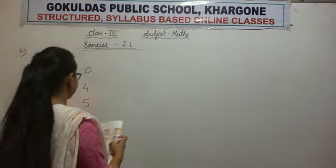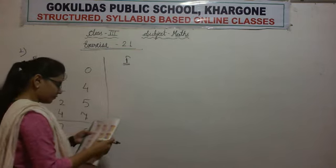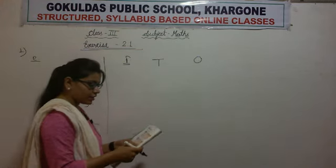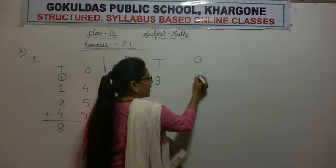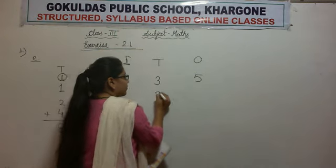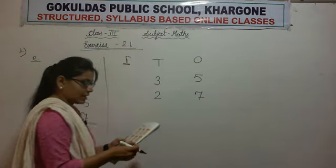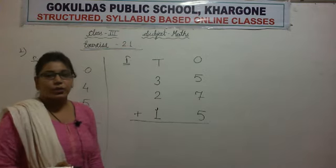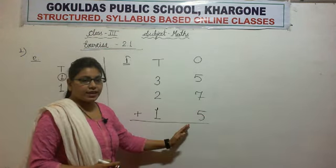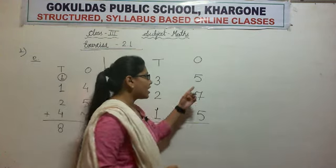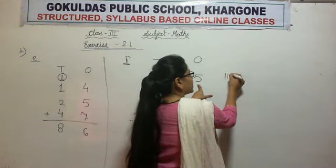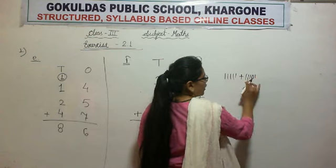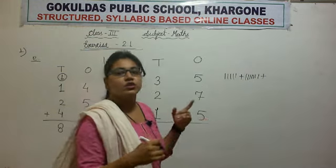Now part F. First of all, we will write the 10's and 1's columns so that we don't mix up the numbers. The first number is 35 — we write 10's below 10's and 1's below 1's. Next number is 27, again 10's below 10's and 1's below 1's. The next number is 15, same process. We put a plus sign because we are doing addition. The very first step is adding 1's with 1's. The first digit is 5, so we draw 5 sticks. Next digit is 7, so we draw 7 sticks. The next number has digit 5 again, so we draw 5 sticks.